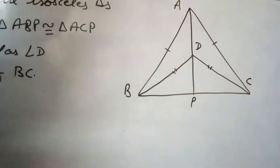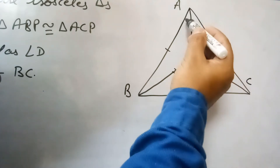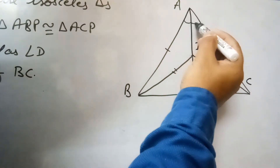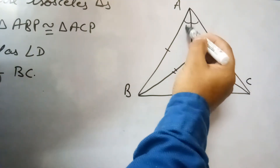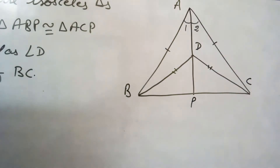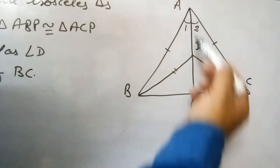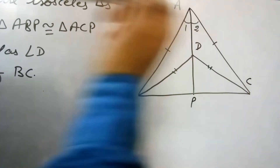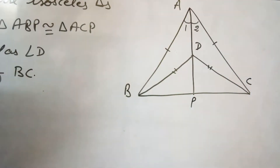From this first part, angle 1 equals angle 2 by CPCT. So this proves that AD bisects angle A.